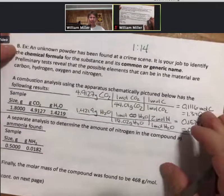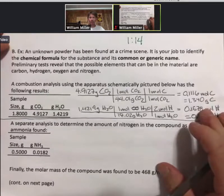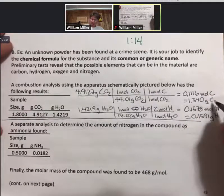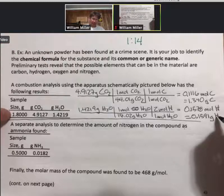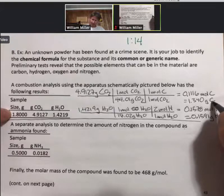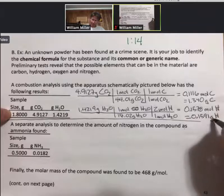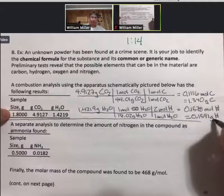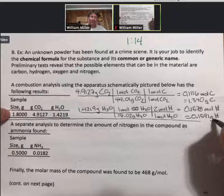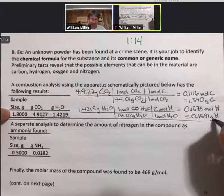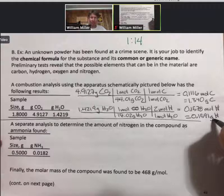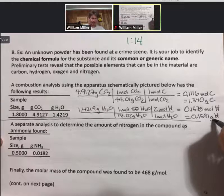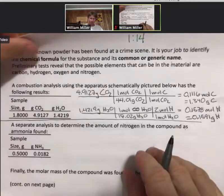Now, in the last problem where there was only carbon, hydrogen, and oxygen, we would then take our sample size, subtract off our grams of carbon, subtract off our grams of hydrogen, and we'd be left with oxygen. But we can't do that yet because there's also nitrogen. To do nitrogen, we will need to do two things.